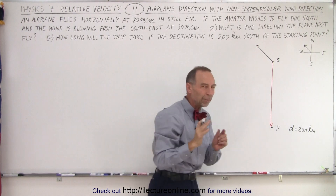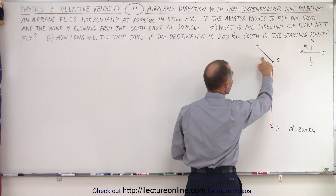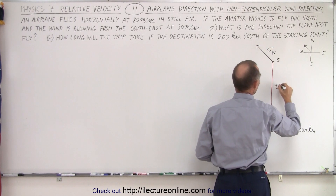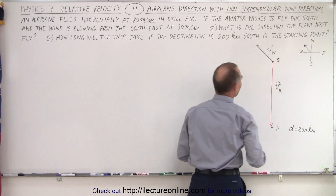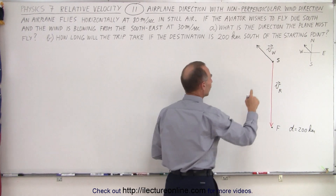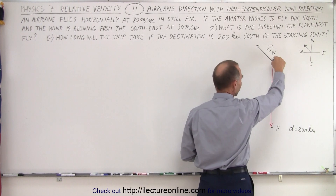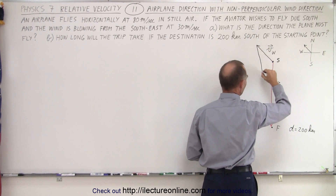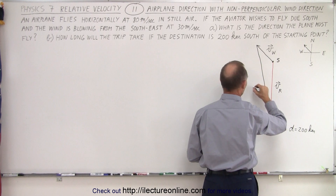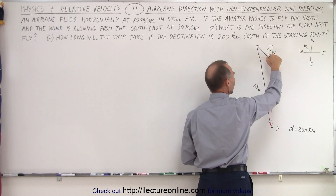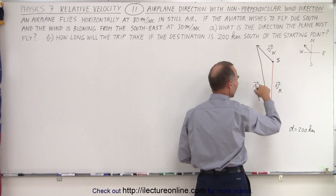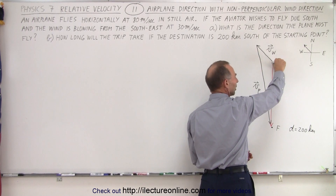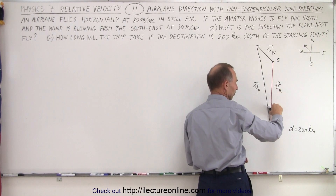Notice that the vectors represent the velocity. This will be the velocity of the wind, and this will be the resultant velocity. The plane needs to go from here to there, so ultimately the plane wants to fly this way, but because of the wind it's going to have to fly at an angle. So this becomes the velocity of the plane. When we add the velocity of the wind to the velocity of the plane, we get the resultant velocity — the plane will point in this direction, but the wind will carry it this way.